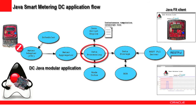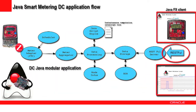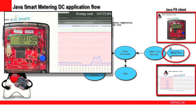At the end of data processing, the data processing component calls the data storage component, responsible for storing all the data in the database. The database can be Berkeley Database or Java DB. The Java client receives data by using REST requests and displays them in a graph.